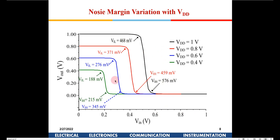With the same devices, if we reduce VDD, the VTC curve shifts and the noise margin reduces — to 371 millivolts, for example. If we go to 0.4 volt, the noise margins decrease further.